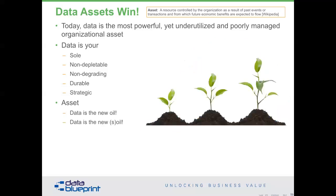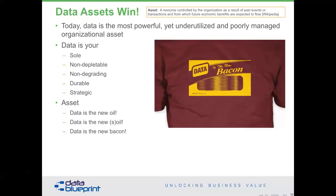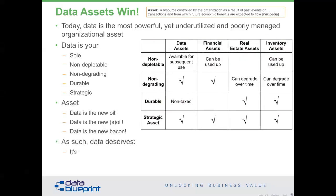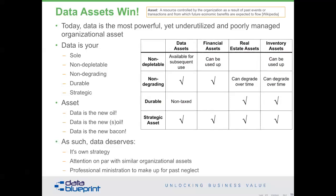Data is usually sold as bacon — really fast and sizzly and great. But data does deserve its own strategy. It deserves attention on par with similar organizational assets, and it deserves professional administration to make up for past neglect. Organizational strategy is developed; our purpose in data is to support organizational strategy. Governance is about that process, and strategy is an essential component for data governance.